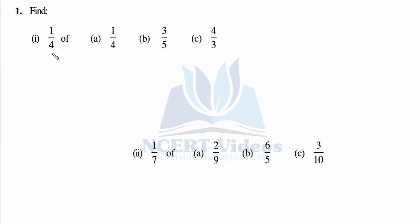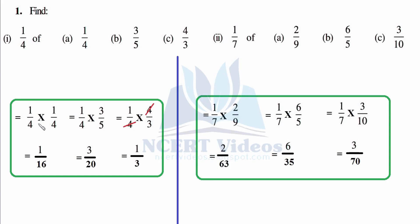Question 1: Find 1/4 of 1/4, 3/5, 4/3, and 1/7. Then find 2/9, 6/5, and 3/10. We have done this type of question — 'of' means multiplication. So we will write all of them and simplify: 1 over 16, this is 3 over 5.